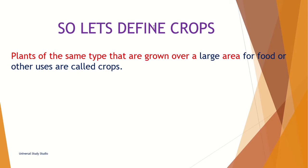So first let's define what are crops. Plants of the same type that are grown over a large area for food or other uses are called crops. So there are basically two types of crops: the Rabi crop and the Kharif crop.